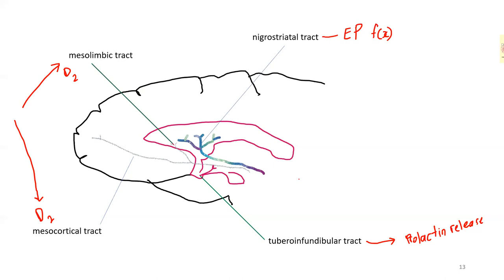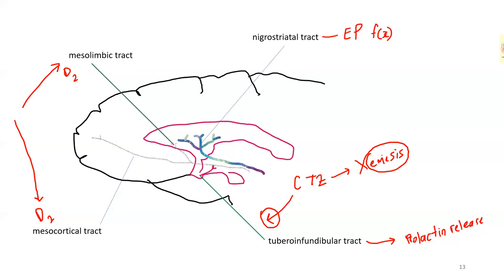The action on the chemoreceptor trigger zone leads to anti-emesis effects. Because of the blockade in the other dopaminergic tracts — such as the nigrostriatal and tuberoinfundibular tracts — this will cause the unwanted effects of the antipsychotics.